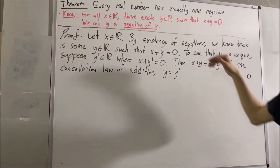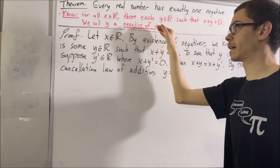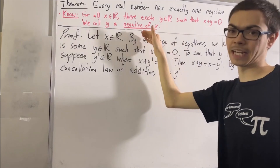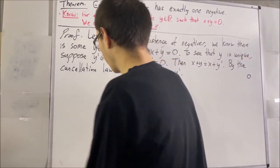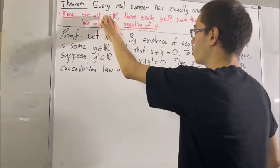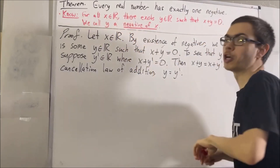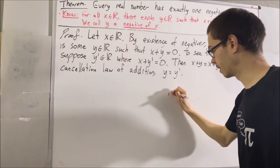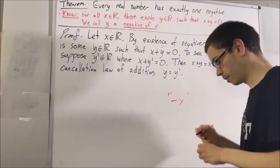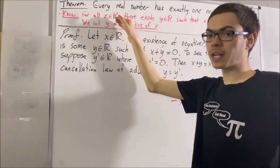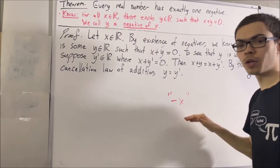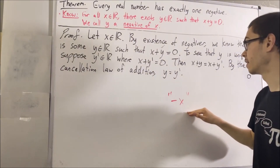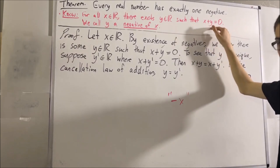And instead of calling y a negative of x, we might as well call y the negative of x. So, given a real number x, we will refer to the negative of x as negative x. For every real number x, there is exactly one real number — we'll call it the negative of x — such that x plus the negative of x is equal to 0.